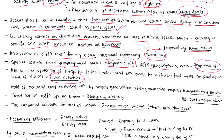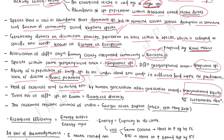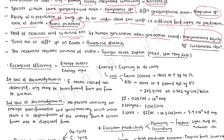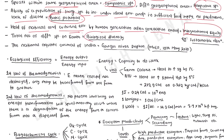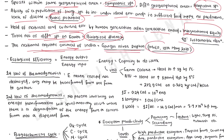Biotic potential of a species is the ability of a population of living species to increase under ideal environmental conditions like sufficient food supply, no predators, lack of disease, etc. Integrational equity is the holding of natural and cultural environment by human generations after generation — sustainable development is an example. Biological diversity is the total number of different species on Earth. The national aquatic animal of India is the Ganges River Dolphin, declared by the Ministry of Environment and Forestry on 18th May 2010.